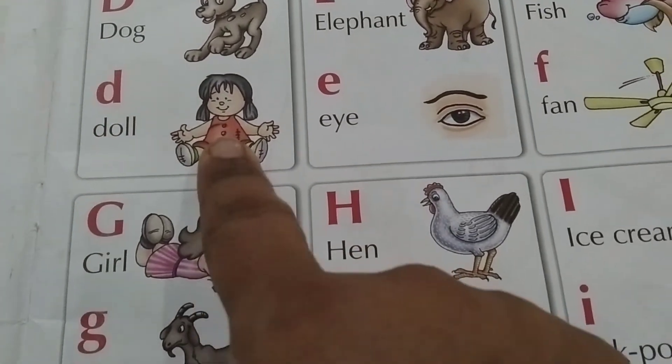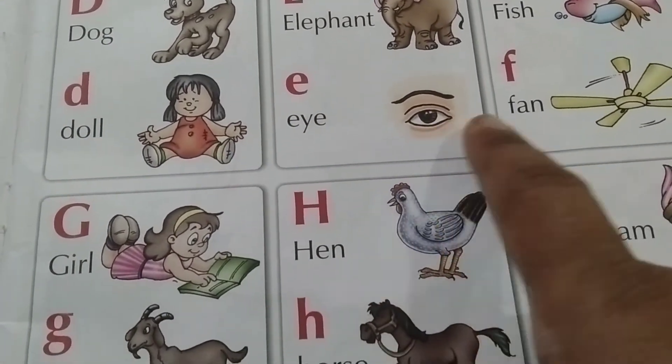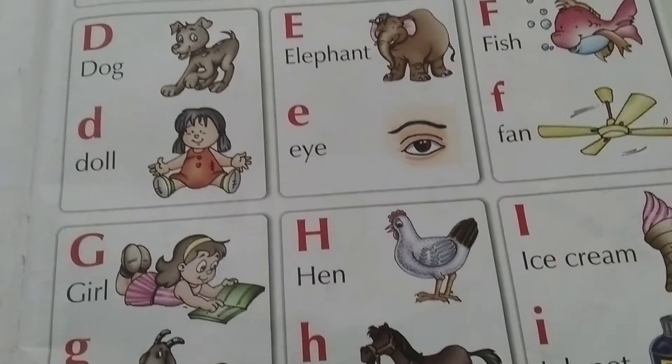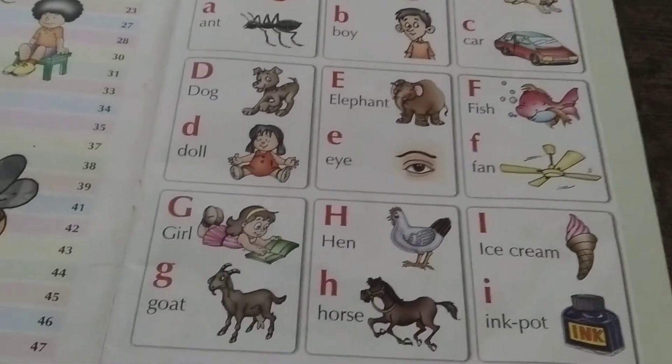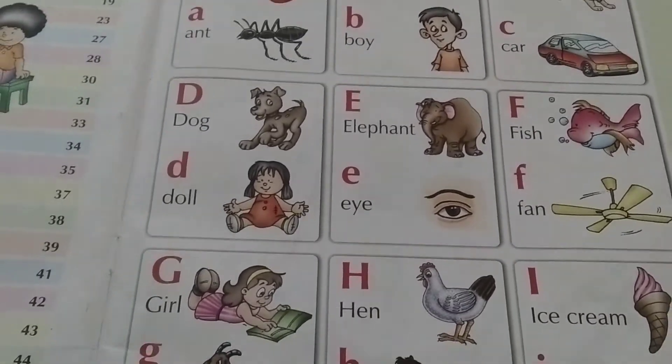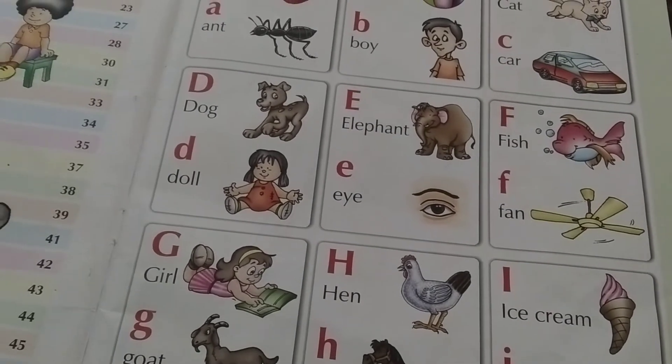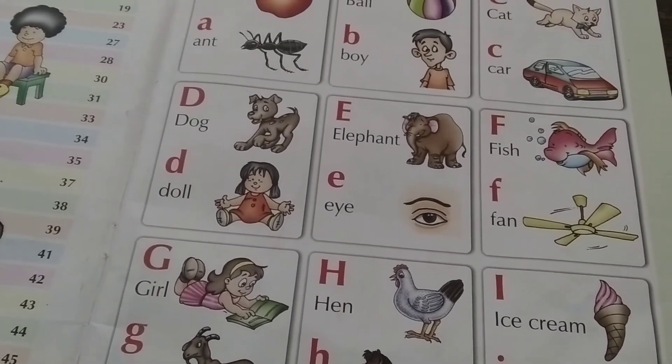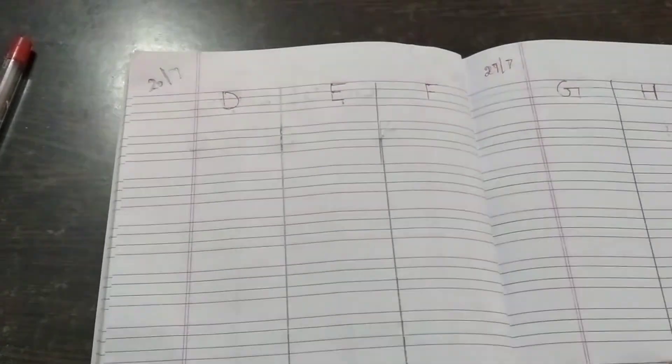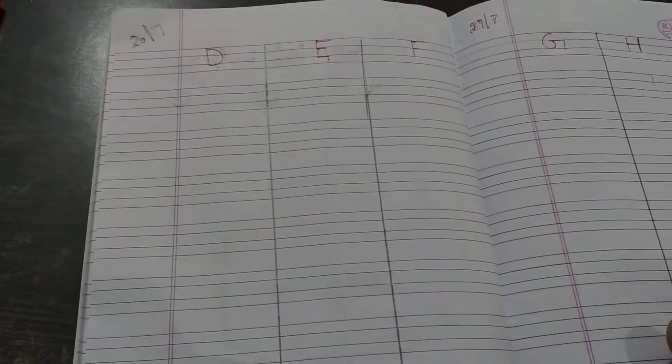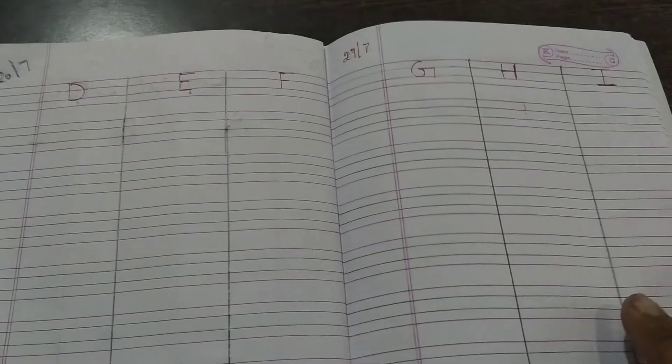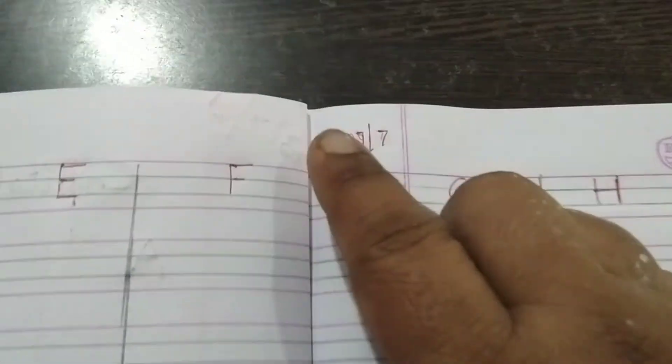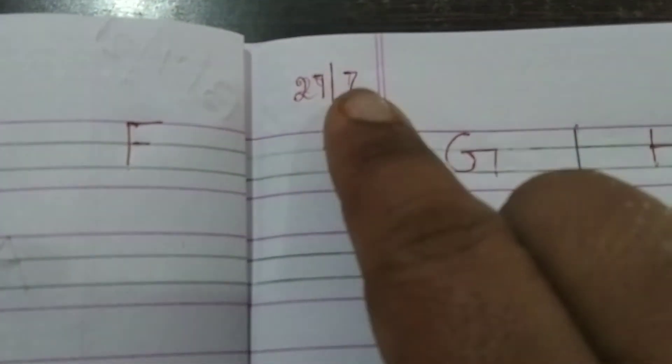Okay, so I showed you the pictures which are related to this letter. Now I show you the notebook how to write. This is your classwork as I have showed you in the starting class itself. It is a 4-line book, 200 page. Okay, write the date 27/7. Letter G, H, I.